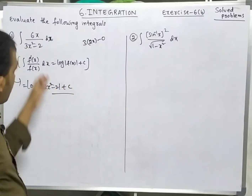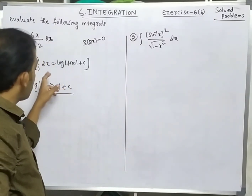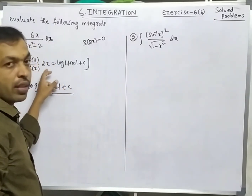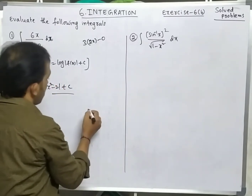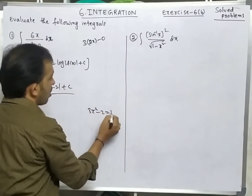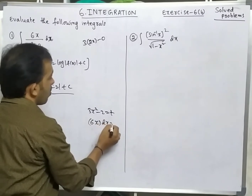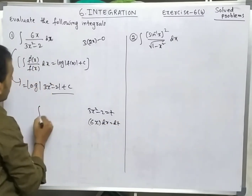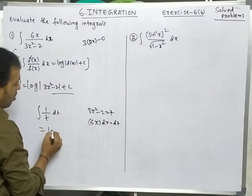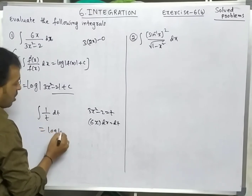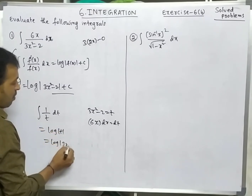If you write like this you will get 2 marks, provided that you write the formula. Otherwise, let us assume 3x² - 2 = t, then 6x dx = dt, and you will get integration of 1/t dt, that is log|t| = log|3x² - 2|.